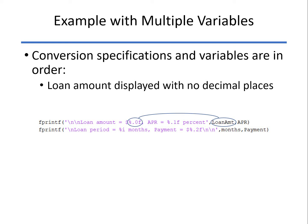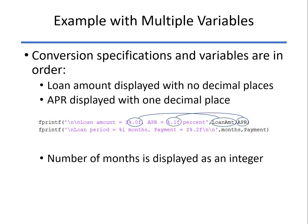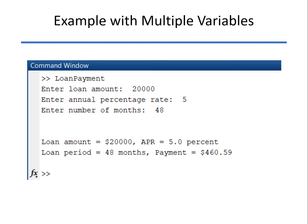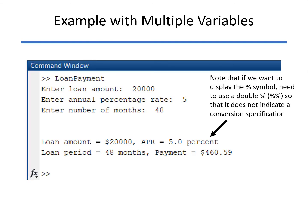And so in this case, the loan amount will be the first thing that gets printed, and that will be with zero decimal places, the APR with one decimal place. And on the next line, the number of months, that's an integer, and the payment itself with two decimal places. And you can see how that gets printed out.